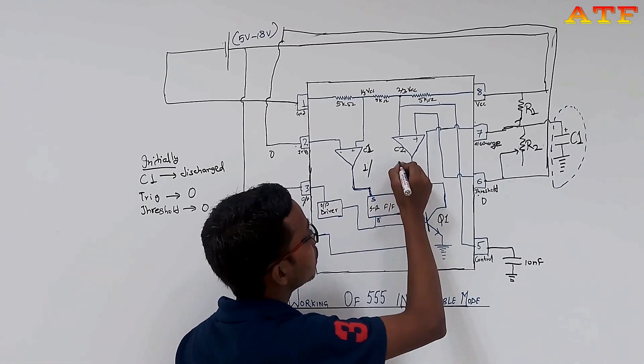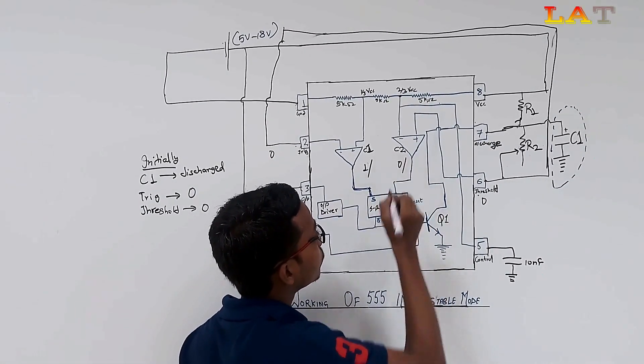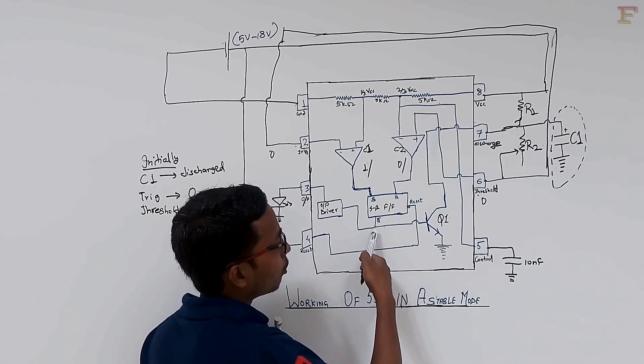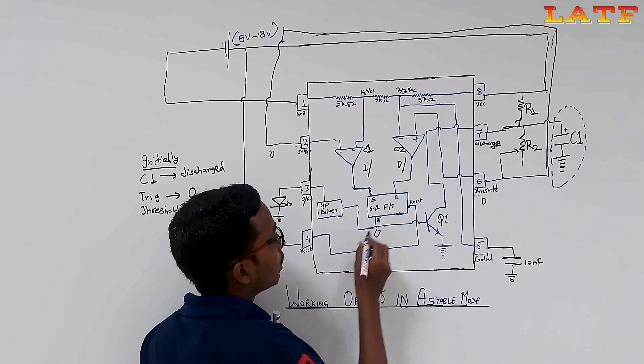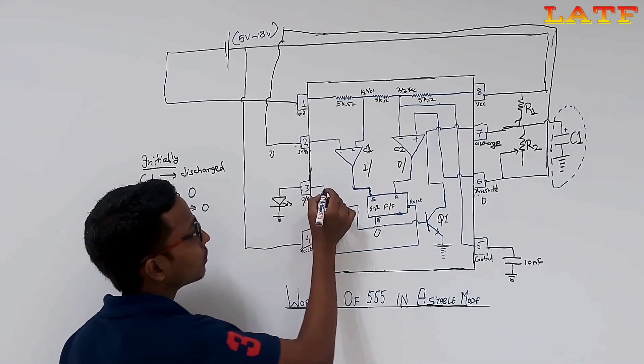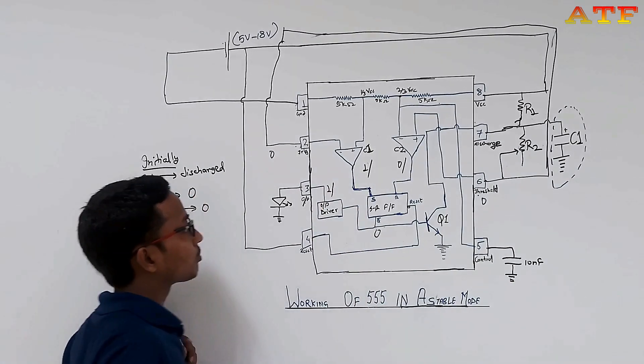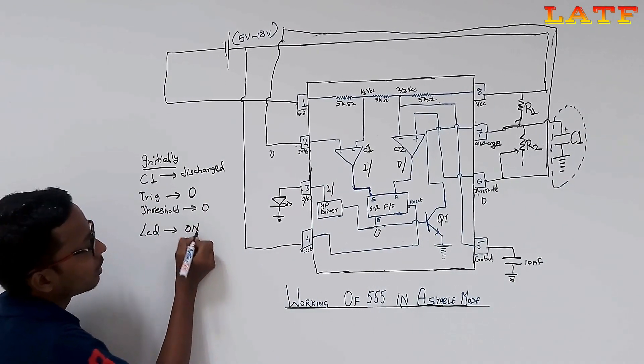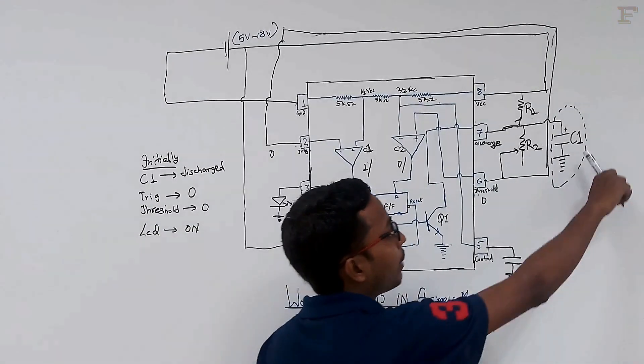This makes the transistor Q1 off because QR is 0 and it is directly applied to the base of transistor. As the transistor is off, capacitor C1 starts charging and when it gets charged to a voltage above the VCC by 3, then the comparator C1 output becomes low. And, the flip-flop output remains the same as previous.